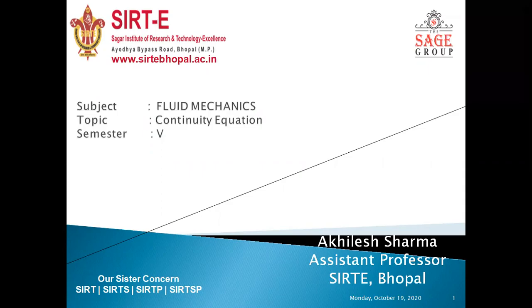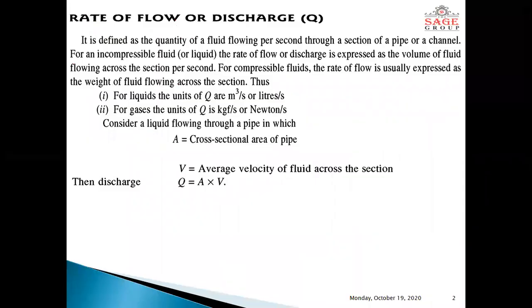Today's topic is continuity equation. Before we start continuity equation, we start with the rate of flow or discharge. It is noted by capital Q. It is defined as the quantity of a fluid flowing per second through a section of a pipe or a channel. For an incompressible fluid or liquid, the rate of flow or discharge is expressed as the volume of fluid flowing across the section per second. For compressible fluids, the rate of flow is usually expressed as the weight of fluid flowing across the section. Thus, for liquids, the units of discharge or rate of flow are meter cube per second or liters per second. And for gases, the unit of capital Q is kgf per second or Newton per second.